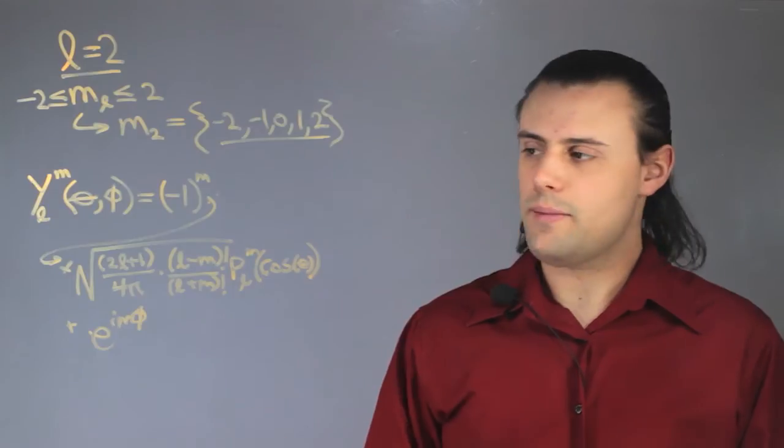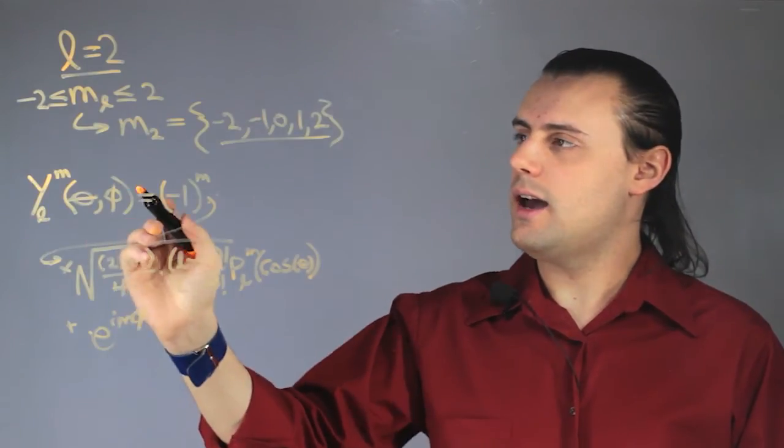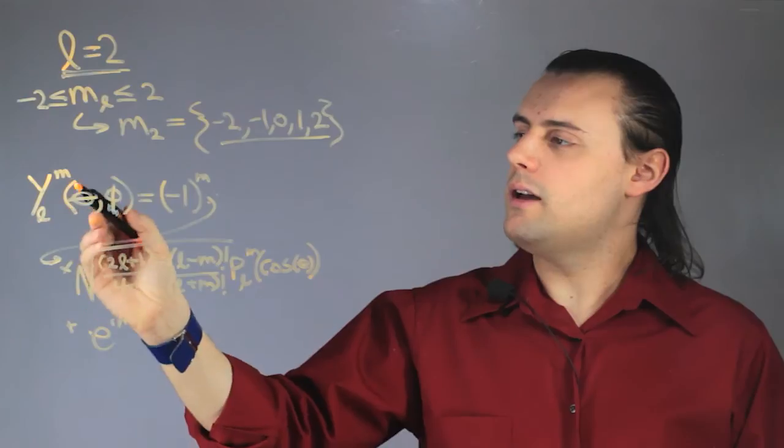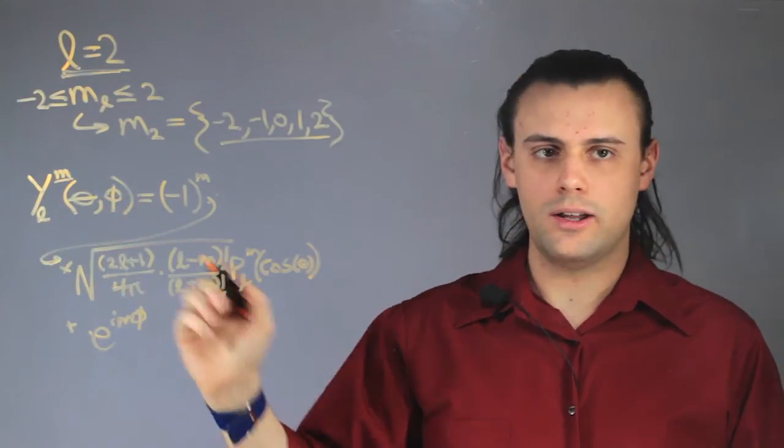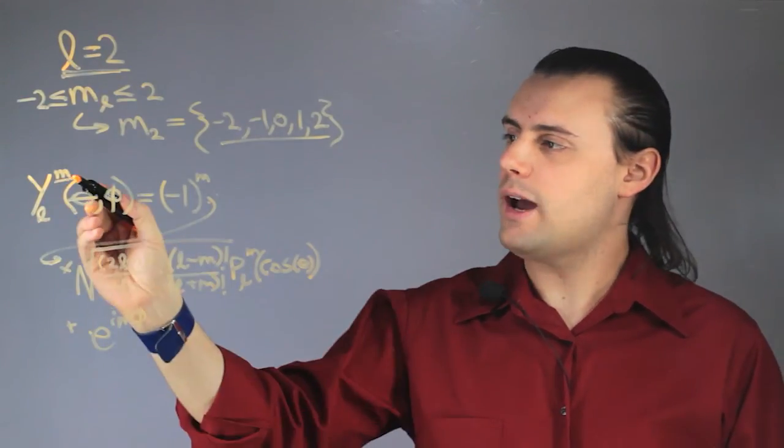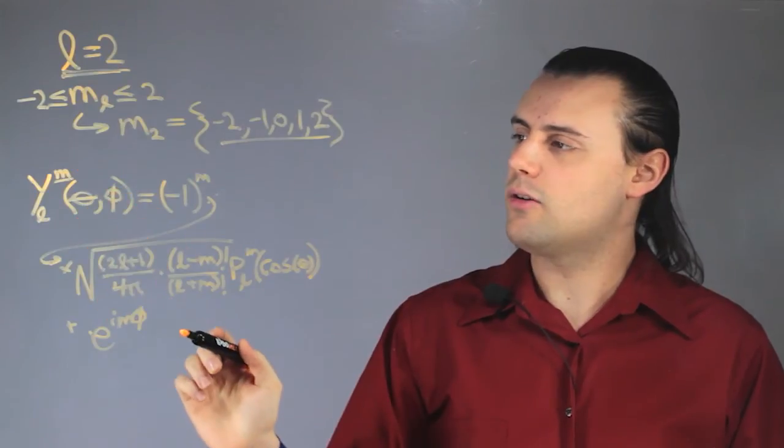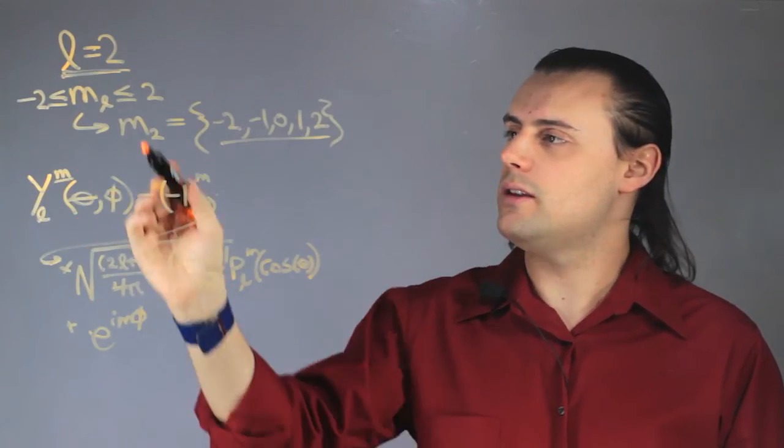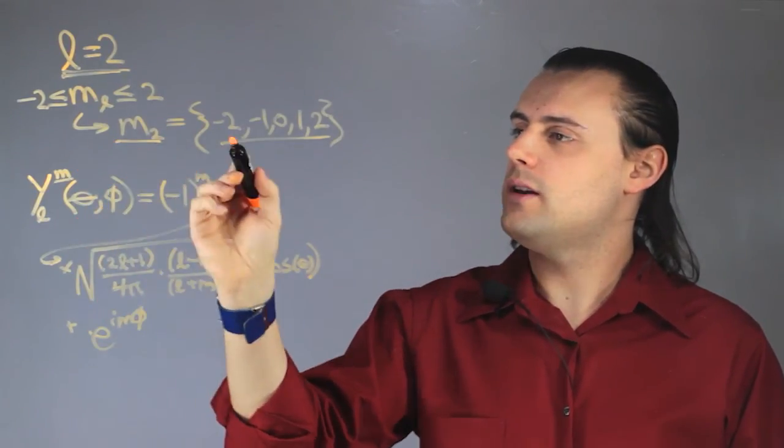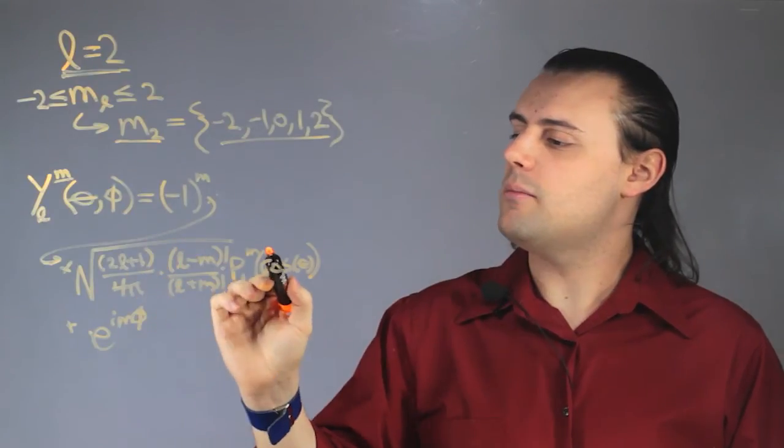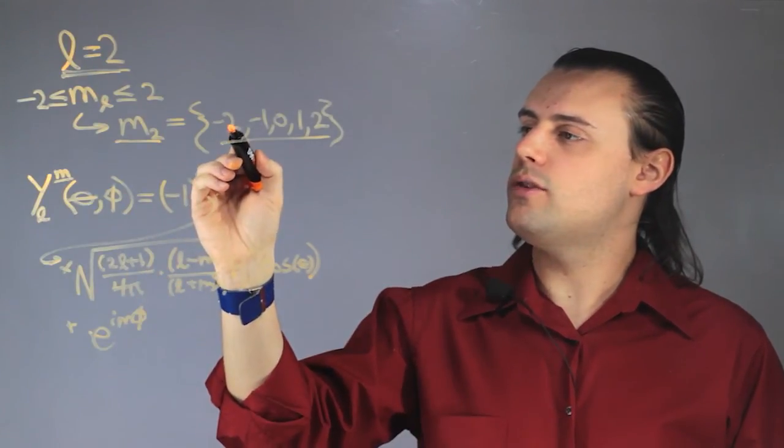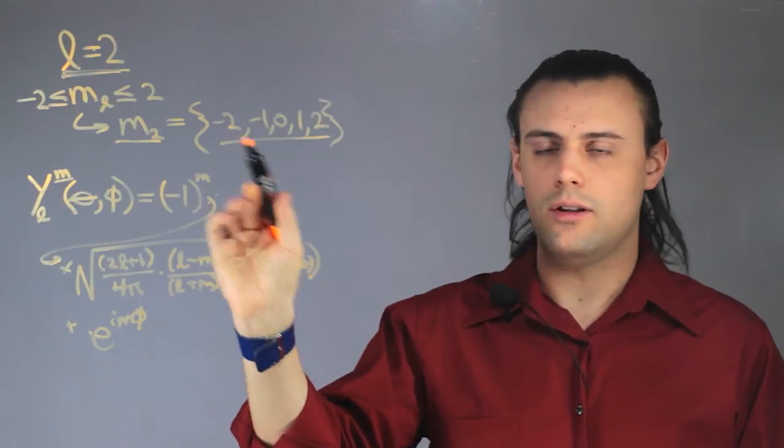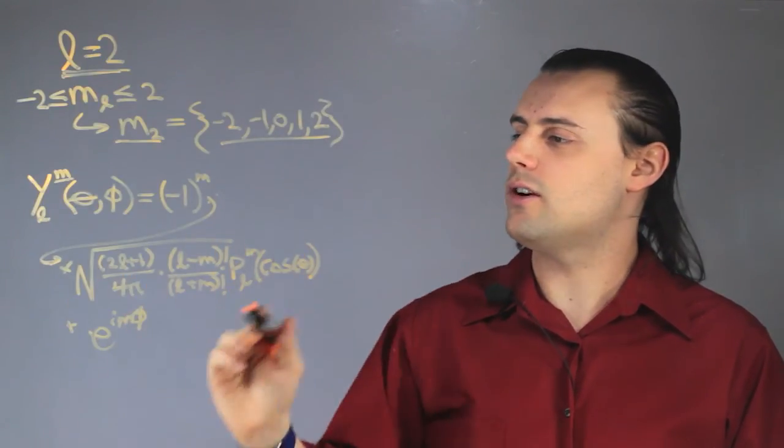So we see that in this case L would be equal to 2, but if we're interested in a particular type of d-orbital, we would have to specify the magnetic quantum number M sub L, in this case M sub 2. So anywhere you see the M's, we would have to put one of these values, these allowed quantum values, into this function.